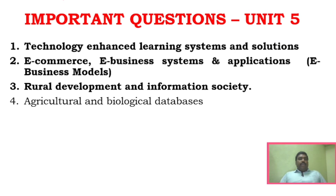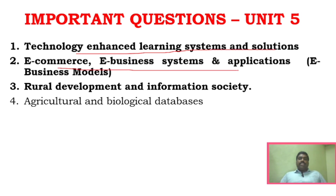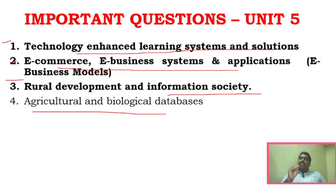For Unit 5, the important areas are: technology enhanced learning systems, e-commerce and e-business systems, e-business models, rural development and information society, and agricultural and biological databases. This covers the important question discussion for this subject.